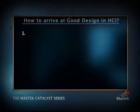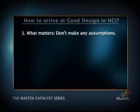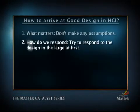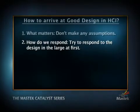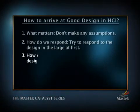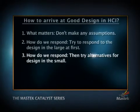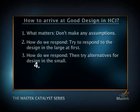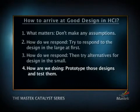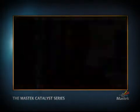To summarize how to arrive at good design in human computer interaction: first, don't make any assumptions about the users — go to real users in their real context and understand them well. Second, try to respond to design at large rather than design in the small first; look at the bigger picture. Then try alternatives for the smaller picture — design in the small. Come up with a whole bunch of design decisions and prototype those decisions. Test back with the original users to make sure your decisions are correct. If some decisions are wrong, go back and change them. And then, only then, freeze on what we call the software requirements.